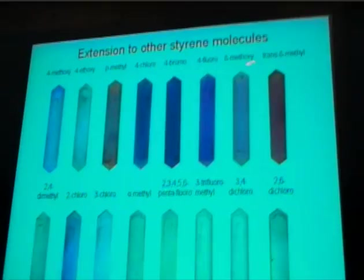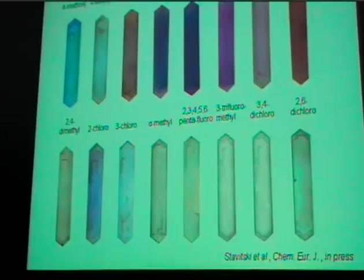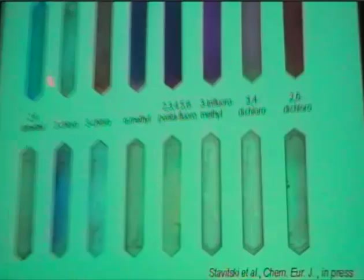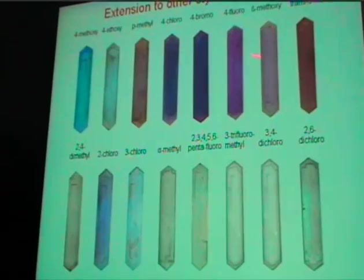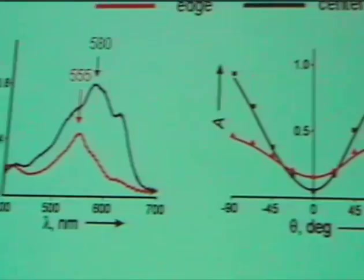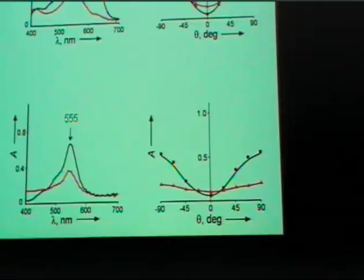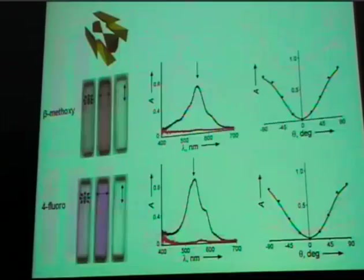We have tested a rather large range of styrene molecules: methoxy, ethoxy, paramethyl, chloro, bromo, etc. Some give nothing — just a white crystal — and those are the more bulky ones that cannot enter the pore system. Depending on the substituent group on the styrene, you see different colors and different intensities. The polarization-dependent experiments for chlorostyrene and methoxystyrene show this is general for all molecules, all showing two or even three different bands corresponding to dimeric or trimeric species.